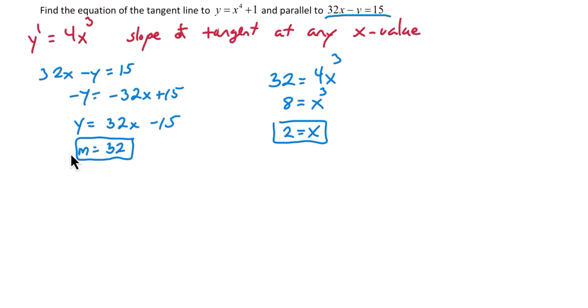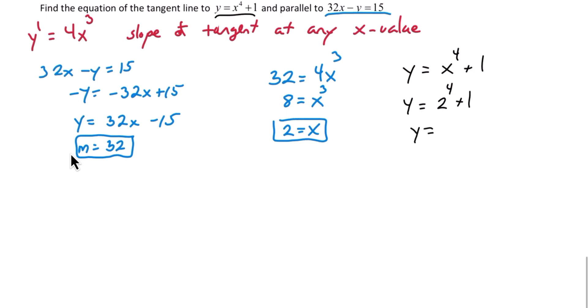Next, we need to find the y coordinate. We have an equation for that. y equals x to the 4th plus 1. y equals 2 to the 4th plus 1. y is equal to 17. So the point of tangency is 2, 17.